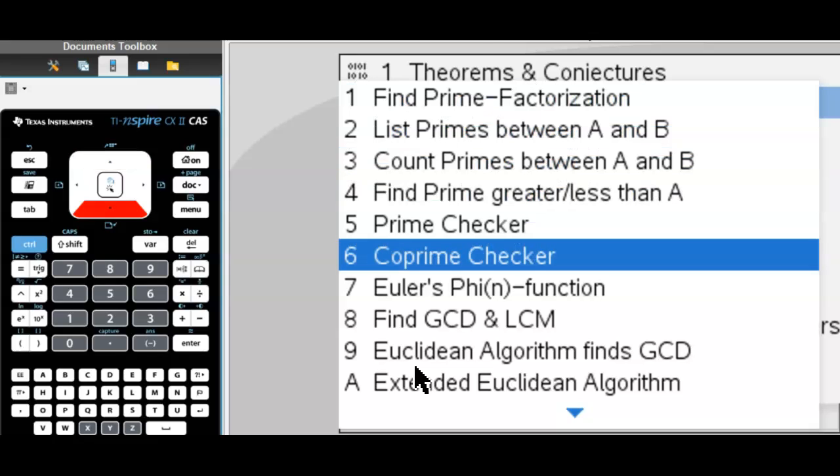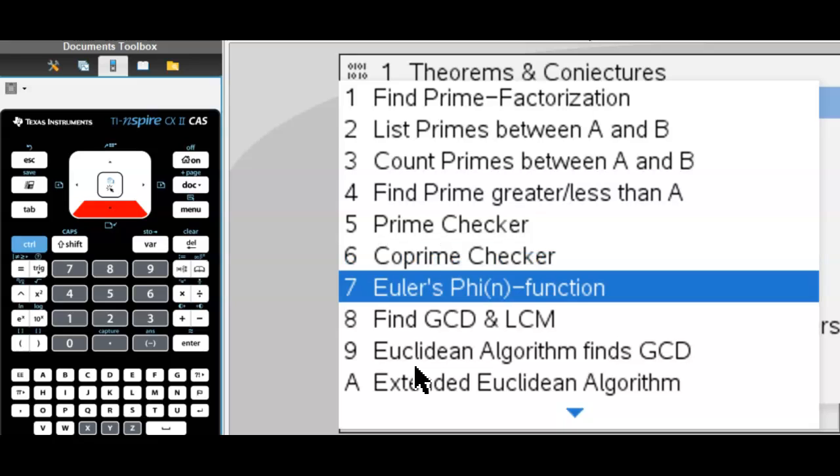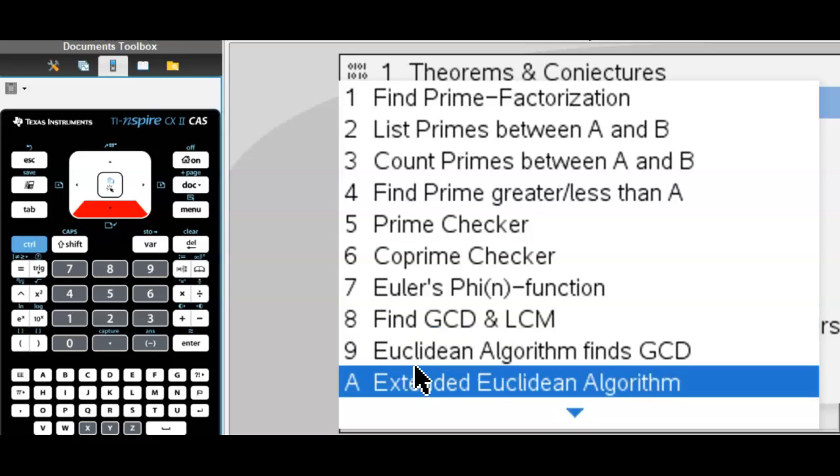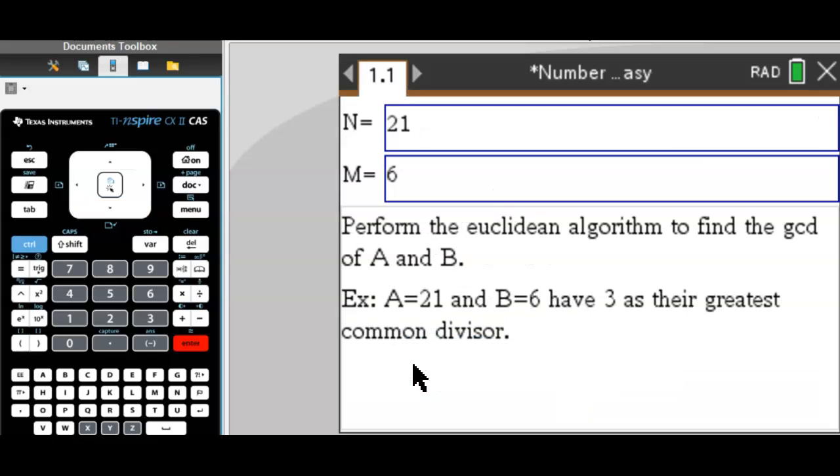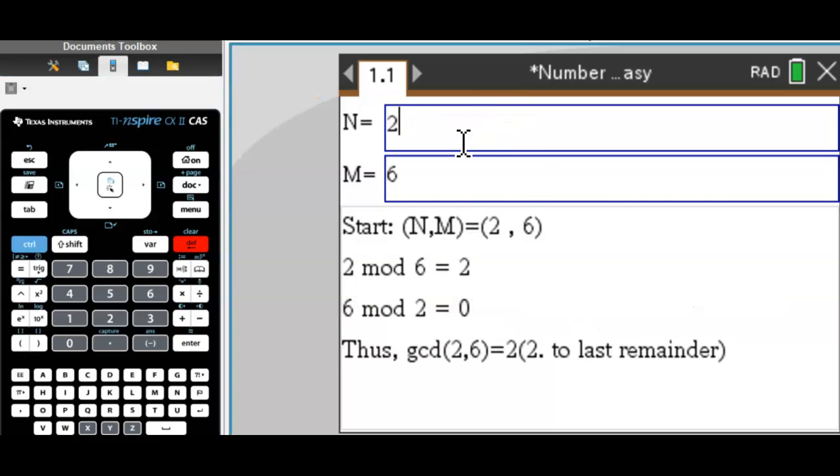We check if two integers are co-prime with Euler's phi function here. Euclidean algorithm, okay, Euclidean algorithm, here we go.